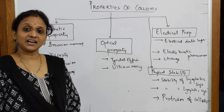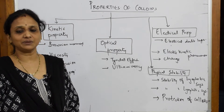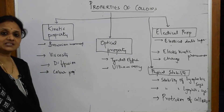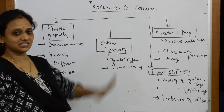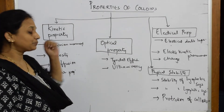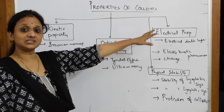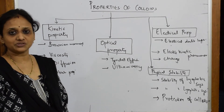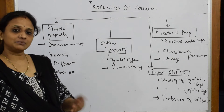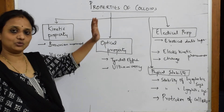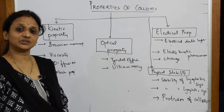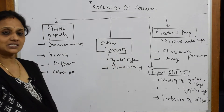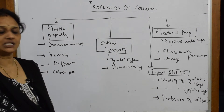Wherever a keyword appears I'll be underlining it. Properties of colloids are studied under four subheadings: kinetic property, optical property, electrical property, and physical stability. In the NCRT textbook all the properties are clubbed together without bifurcation, but we'll learn them under different categories. Let's begin with the first concept — kinetic property.